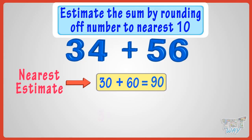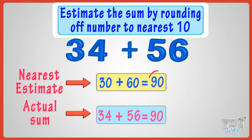Now, 34 plus 56 gives us 90. Oh, wow! Here, the estimate and actual sum are the same. Good!